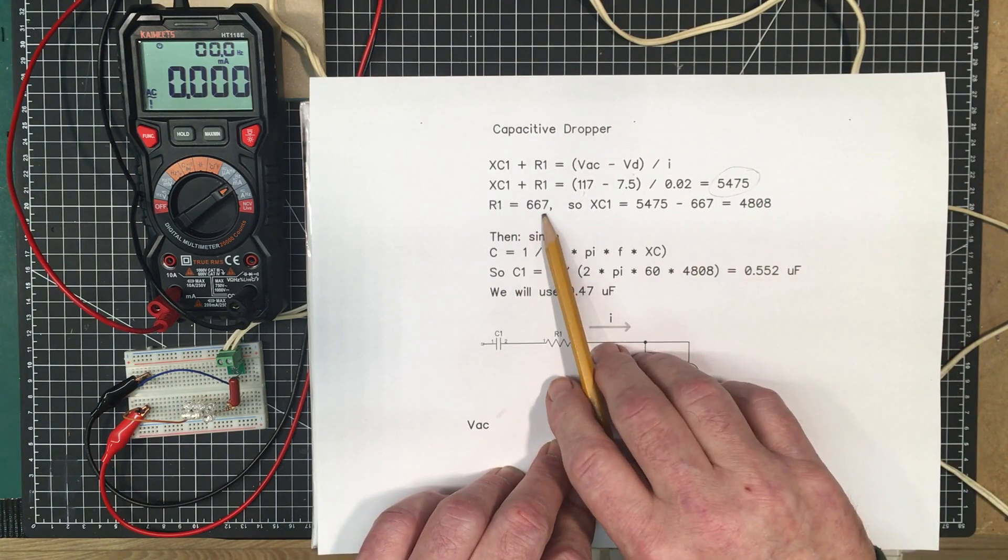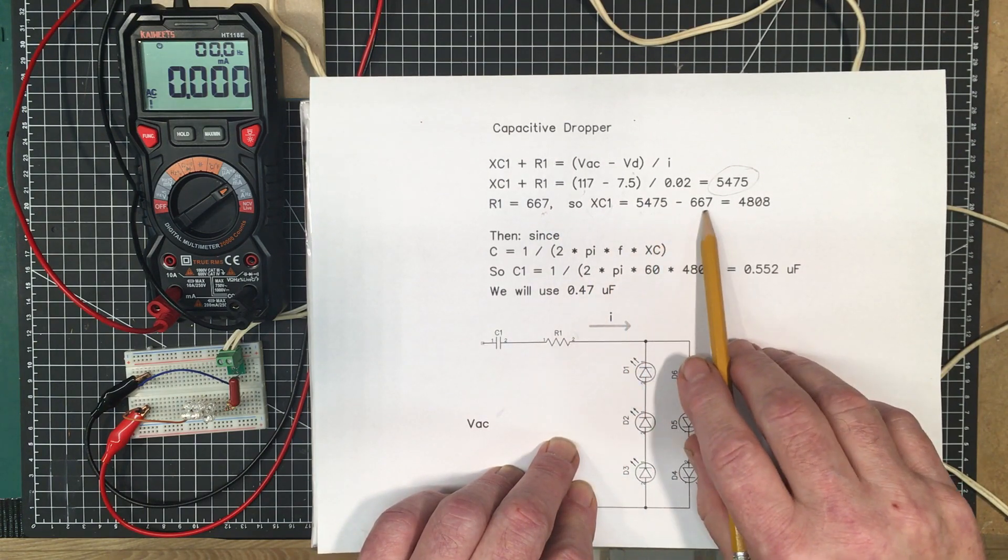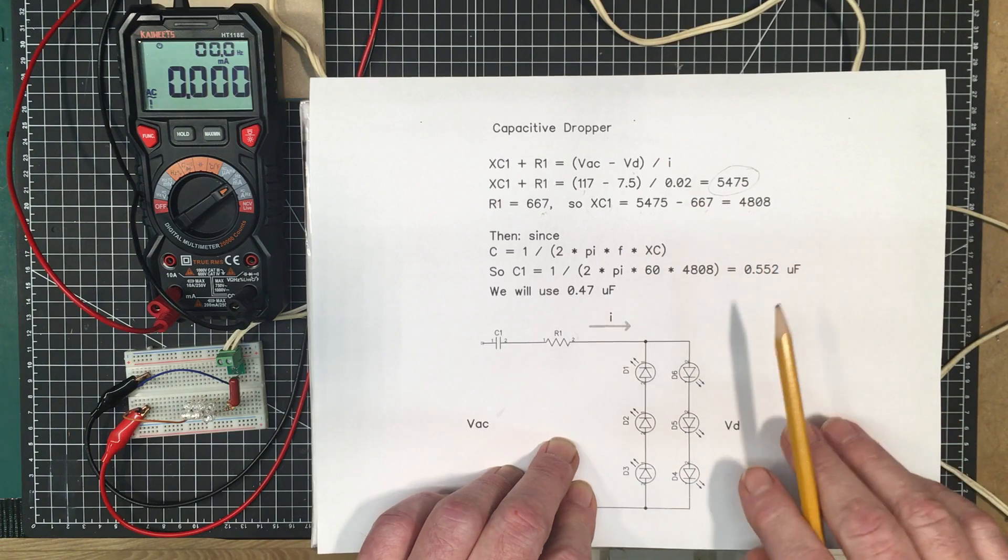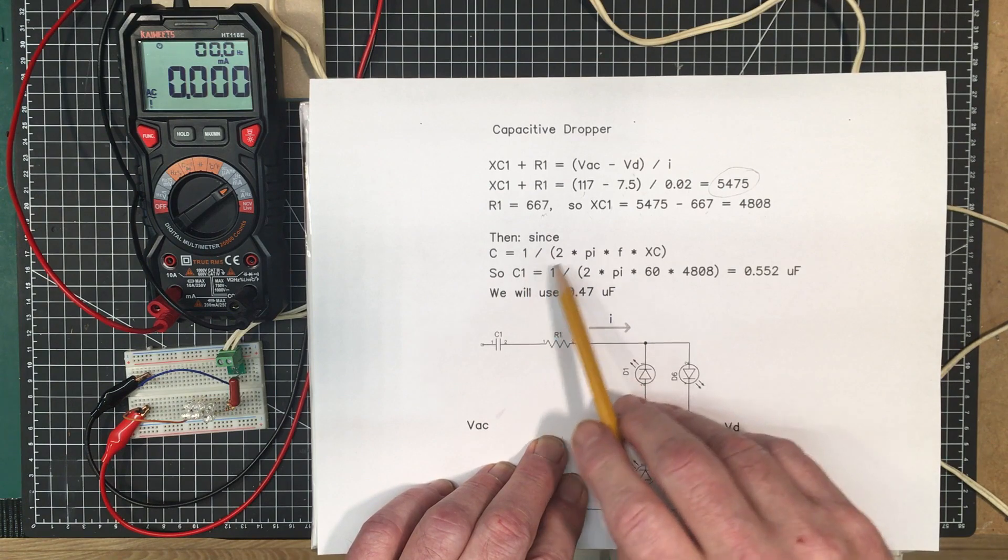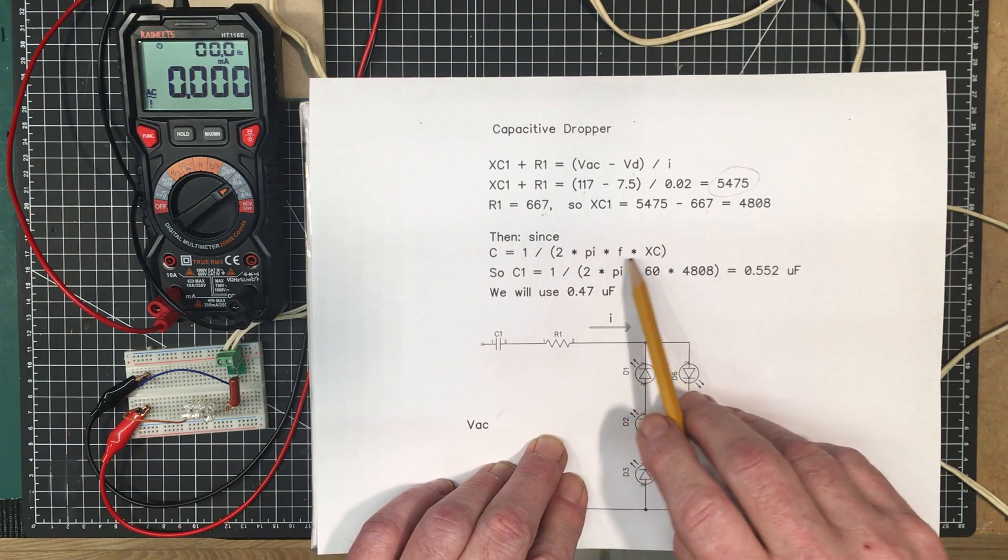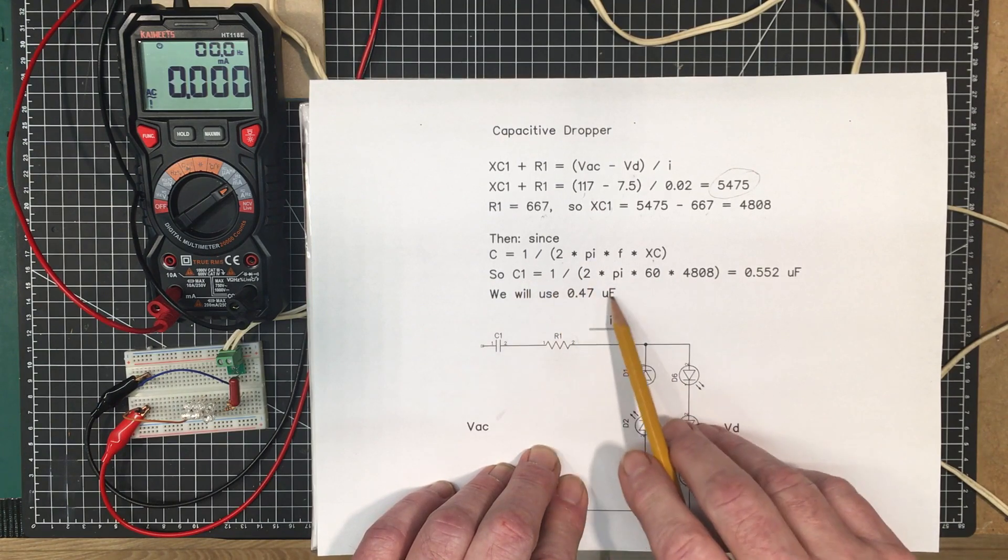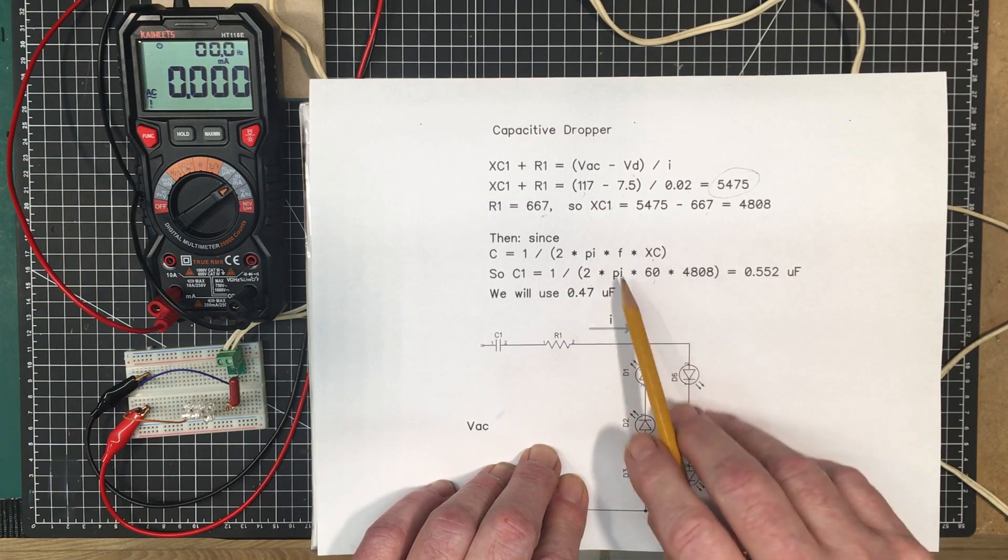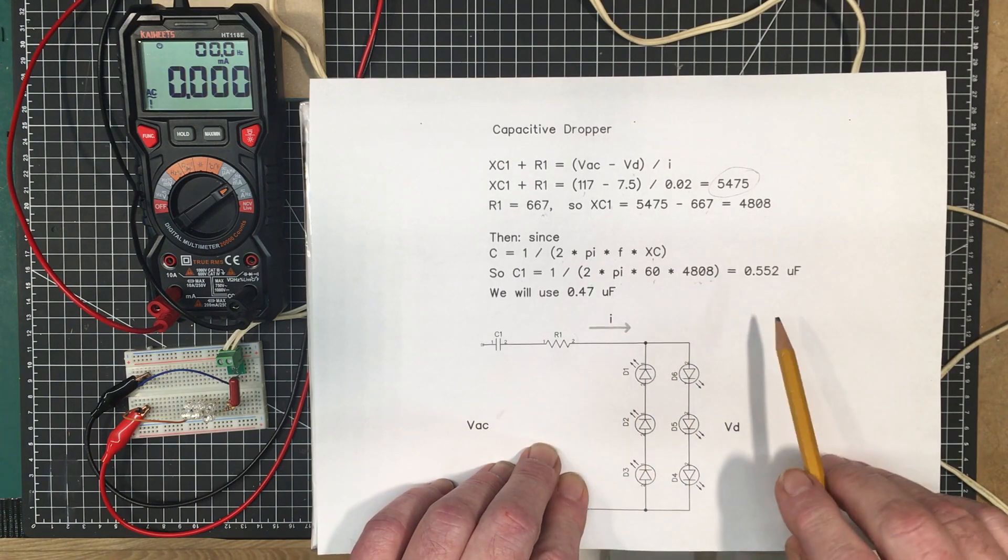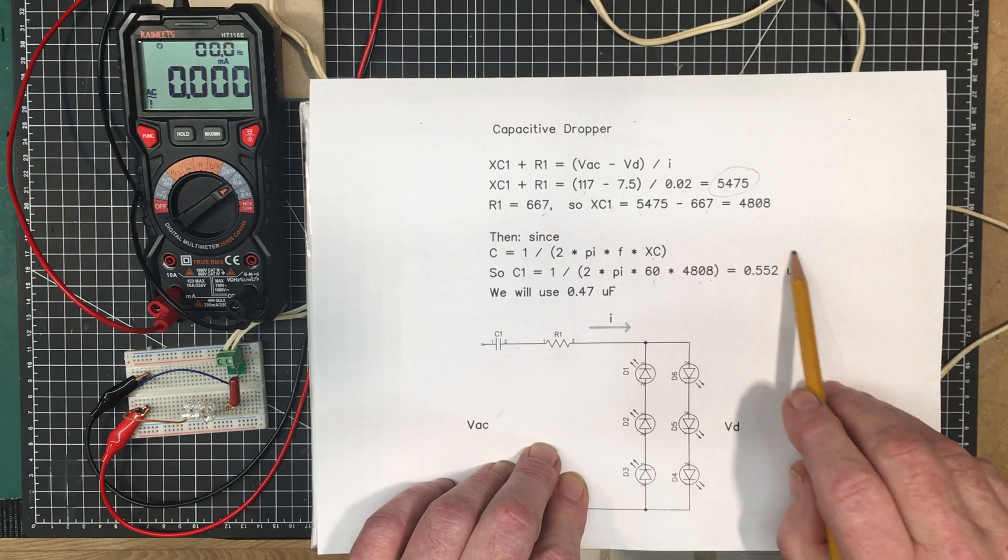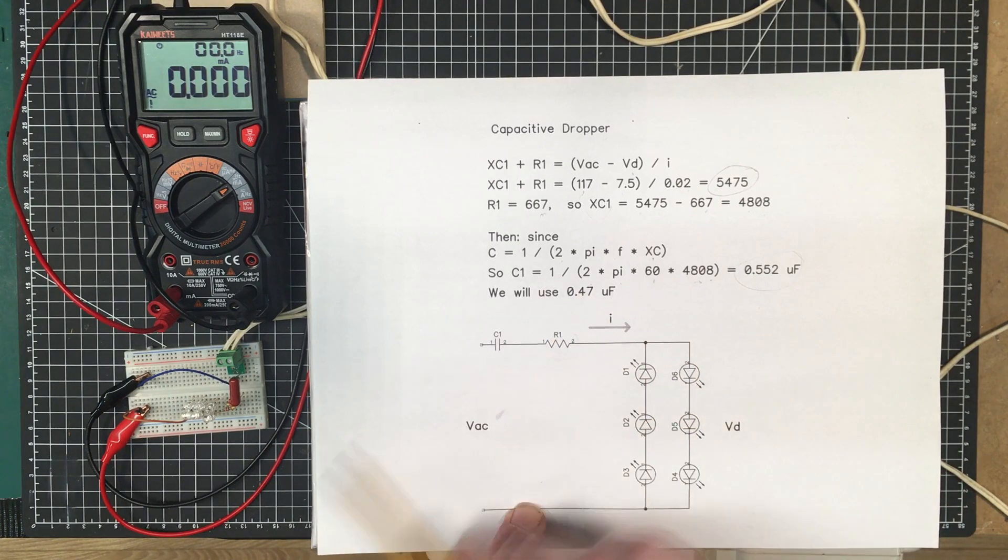Now R1 is 667, so the reactance of the capacitor is going to be 5,475 minus 667, or 4,808. The capacitor is going to be 1 divided by 2 times pi times the frequency times the reactance. So for us, C1 is going to be 1 divided by 2 times pi times 60, which is our frequency, times our reactance, which is 4,808 ohms. That gives us approximately 552 nanofarads or 0.552 microfarads.